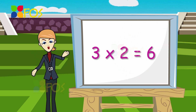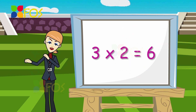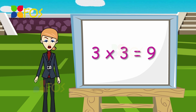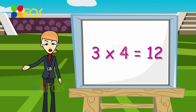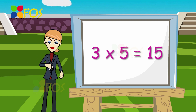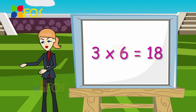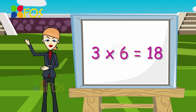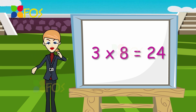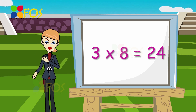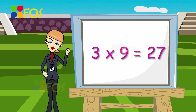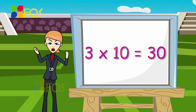Three twos are six. Three threes are nine. Three fours are twelve. Three fives are fifteen. Three sixes are eighteen. Three sevens are twenty-one. Three eights are twenty-four. Three nines are twenty-seven. Three tens are thirty.